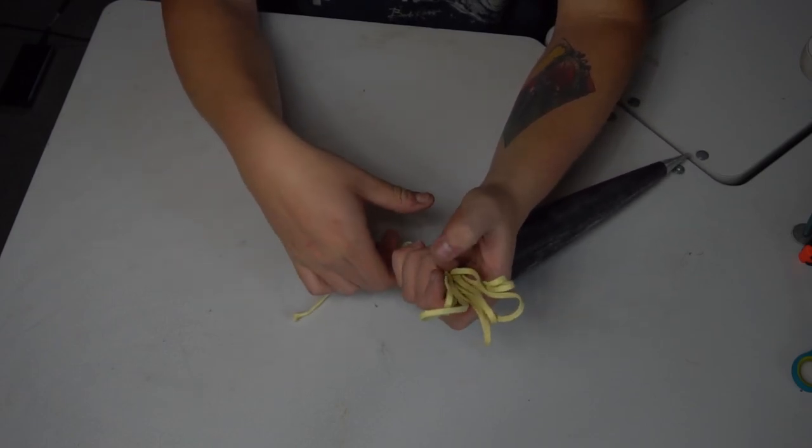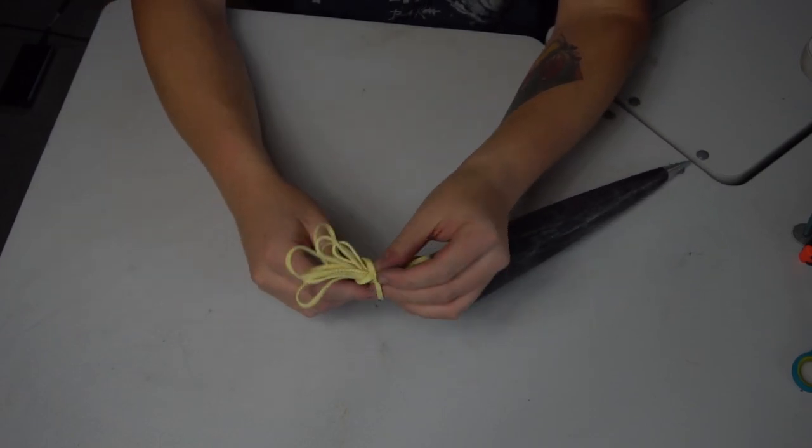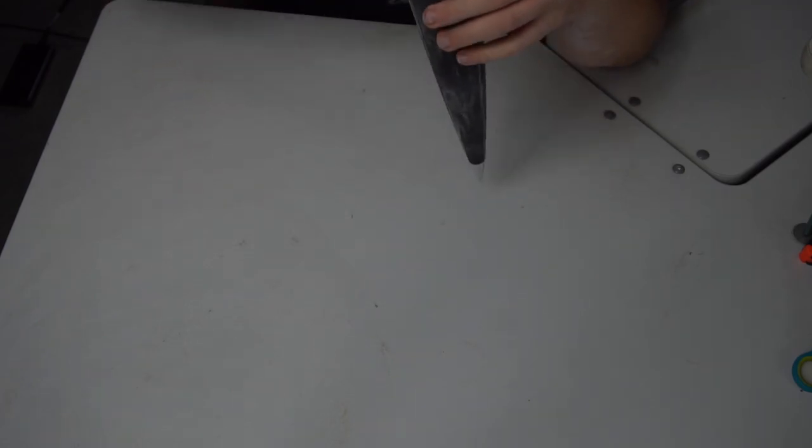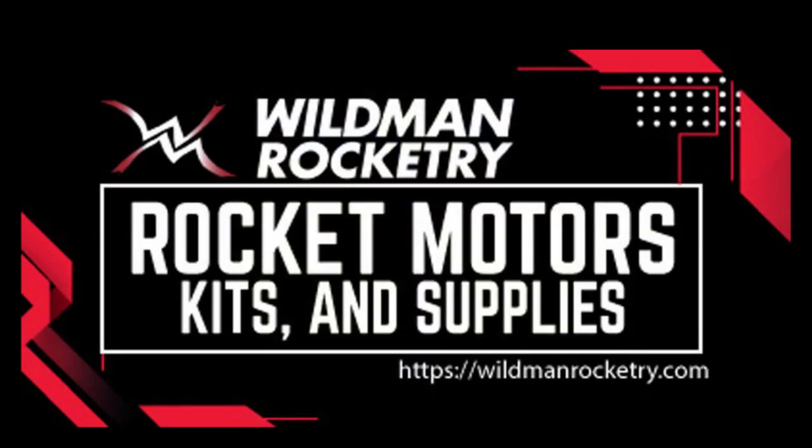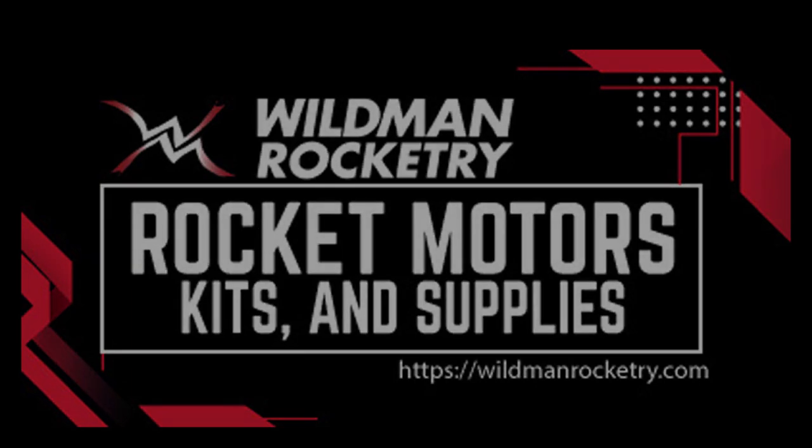You'll find that many people leave high performance kits like this unpainted to save weight but feel free to finish it to your liking and once you're complete go punch a hole in the sky. Thank you for watching the Wildman Mach 2 build instructions. If you haven't yet bought yourself a Mach 2 check out the link in the description and be sure to get yourself some shock cord and additive aerospace sled as well. If you have any questions feel free to leave them in the comment section and we will get back to you as fast as possible.